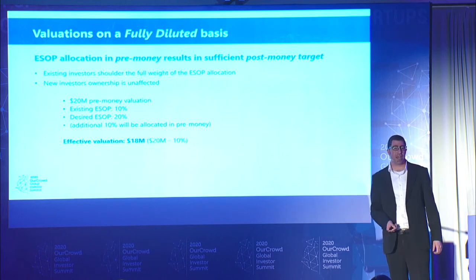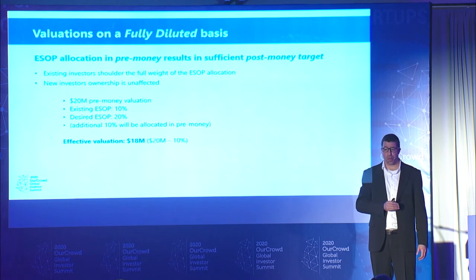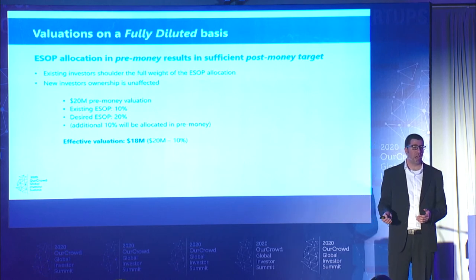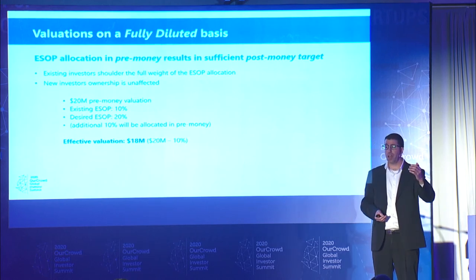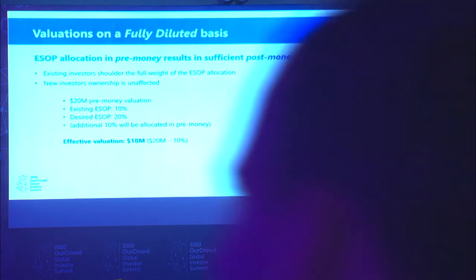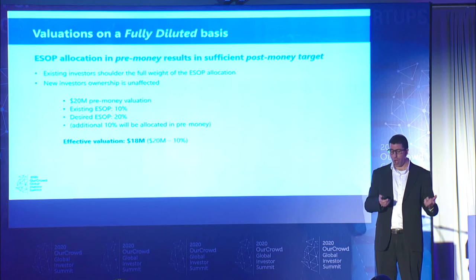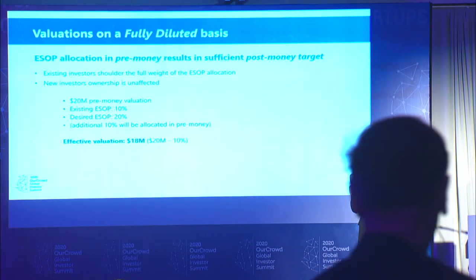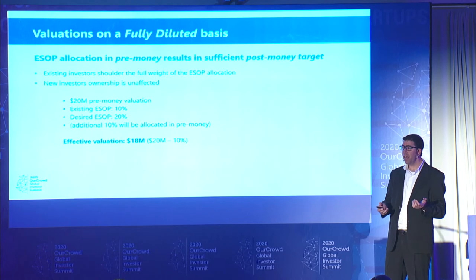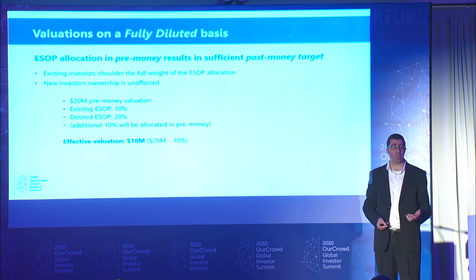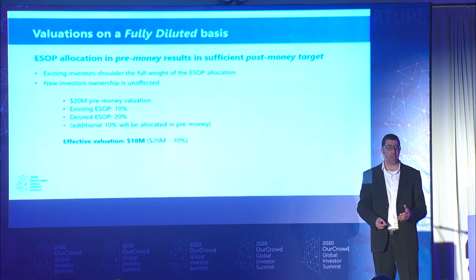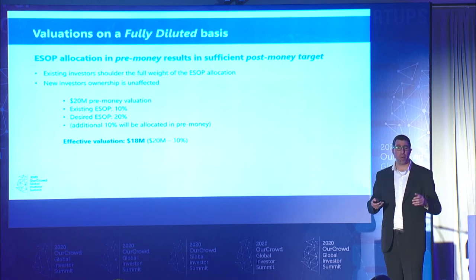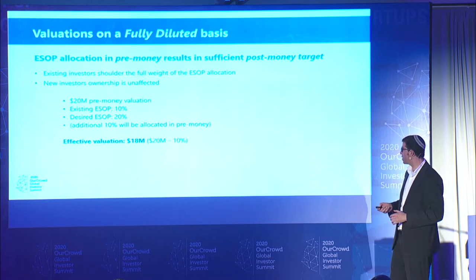A few years ago, a company in our portfolio came to us thrilled — the CEO had attracted a term sheet from a great investor, and the valuation was higher than the previous round. The founder was thrilled because on paper it looked like an up round. What he failed to appreciate was that the ESOP requirement the new shareholder imposed effectively brought down the valuation and share price, so although it looked like an up round, it was actually a down round. That took a lot of finesse to resolve.